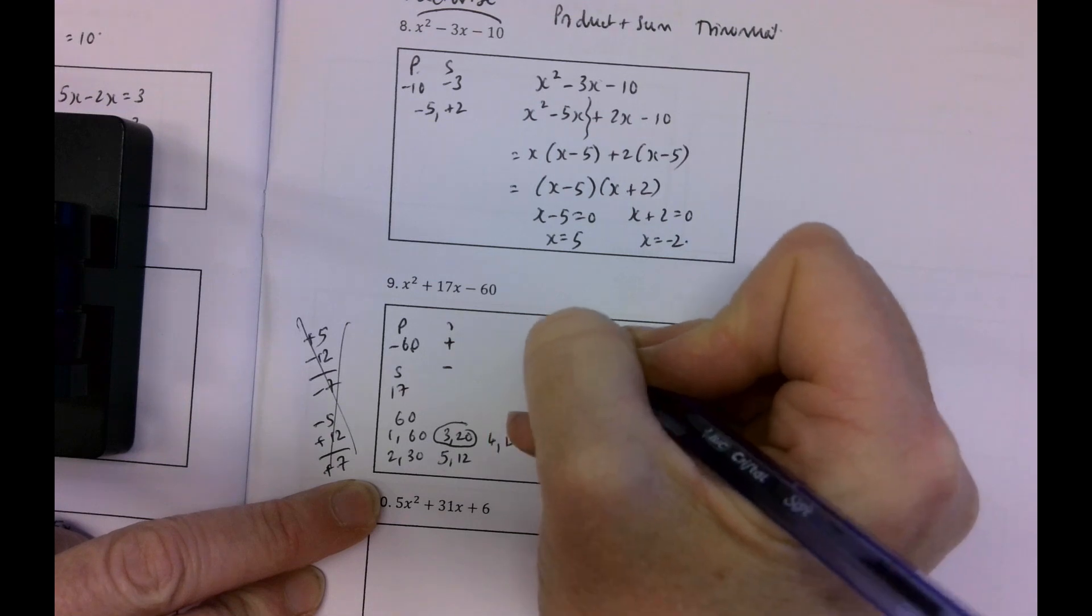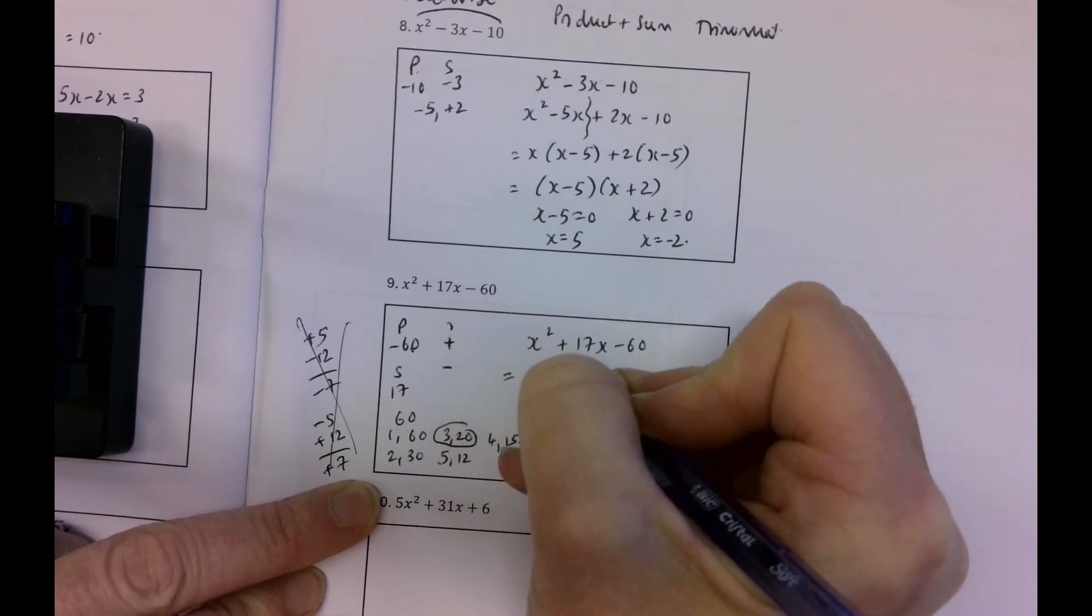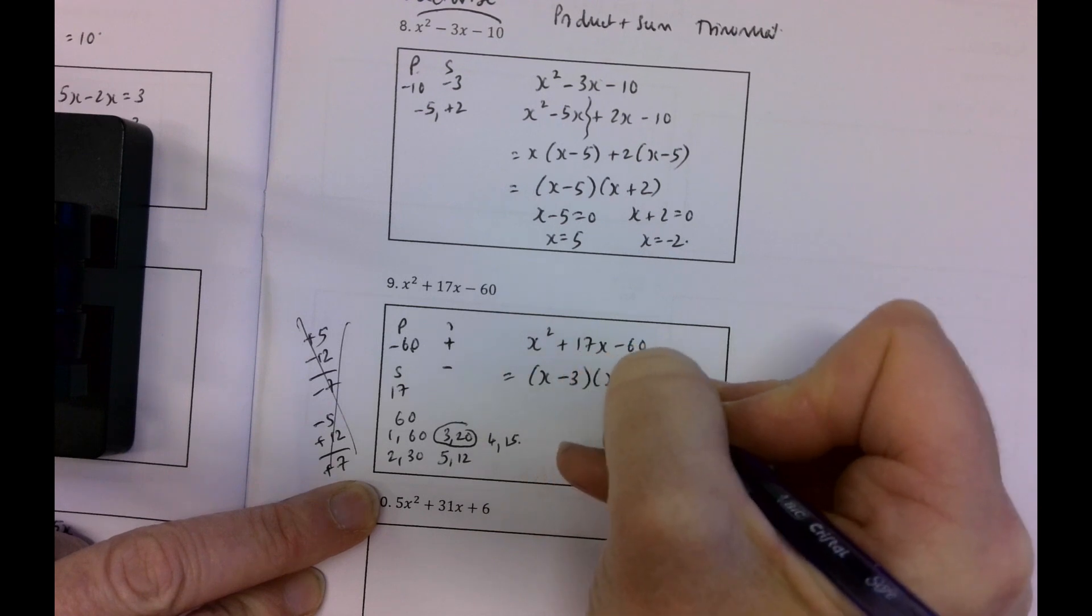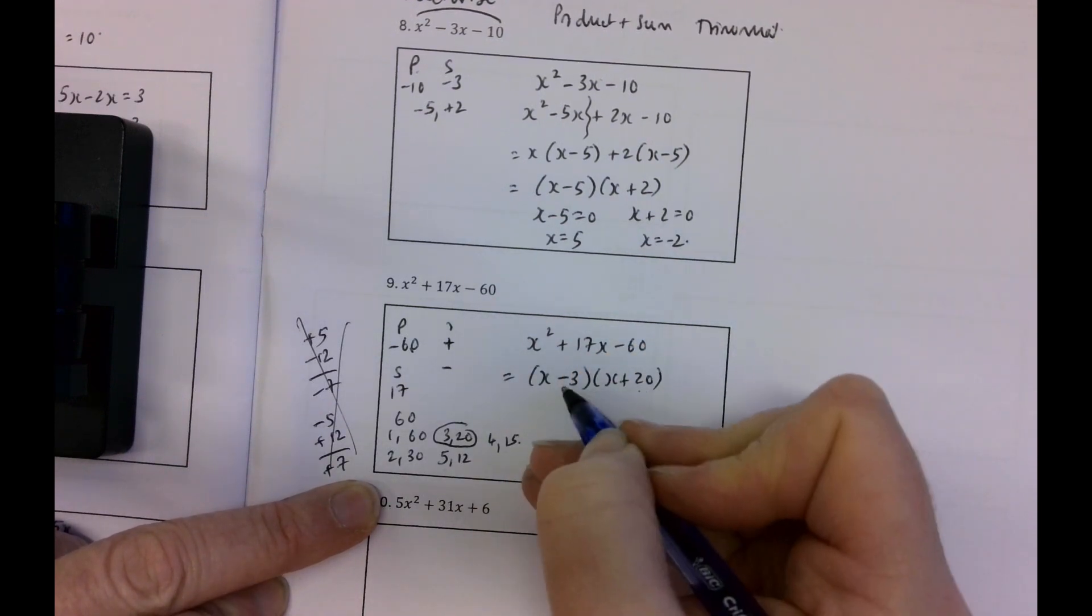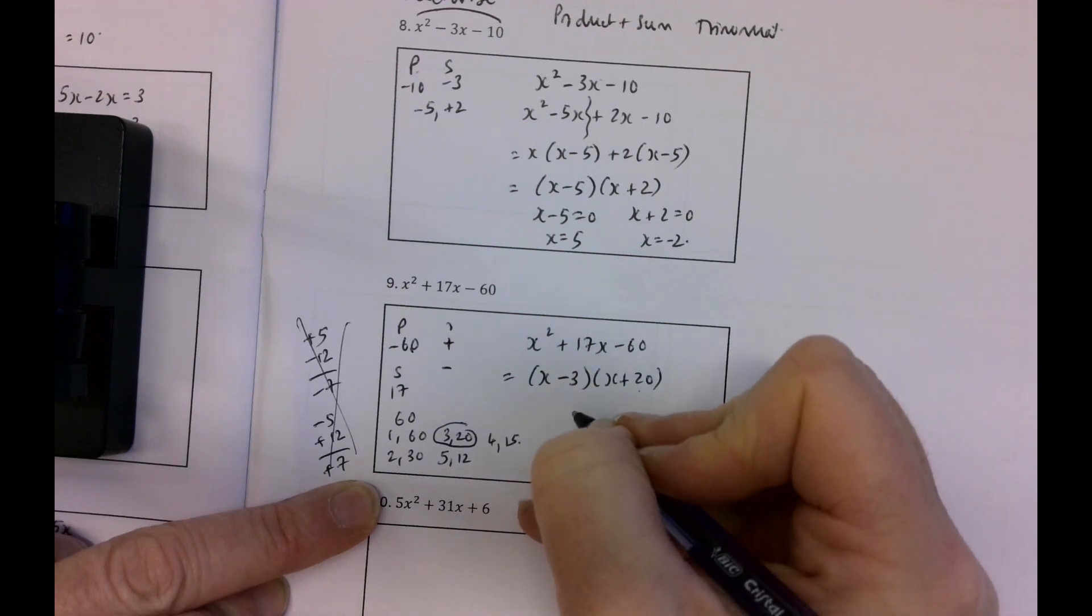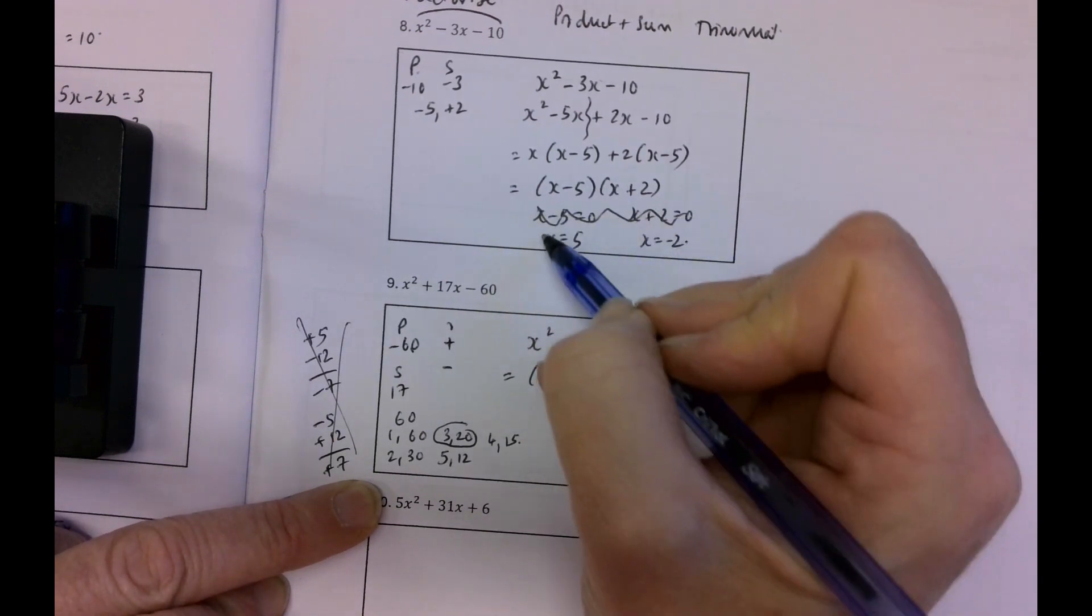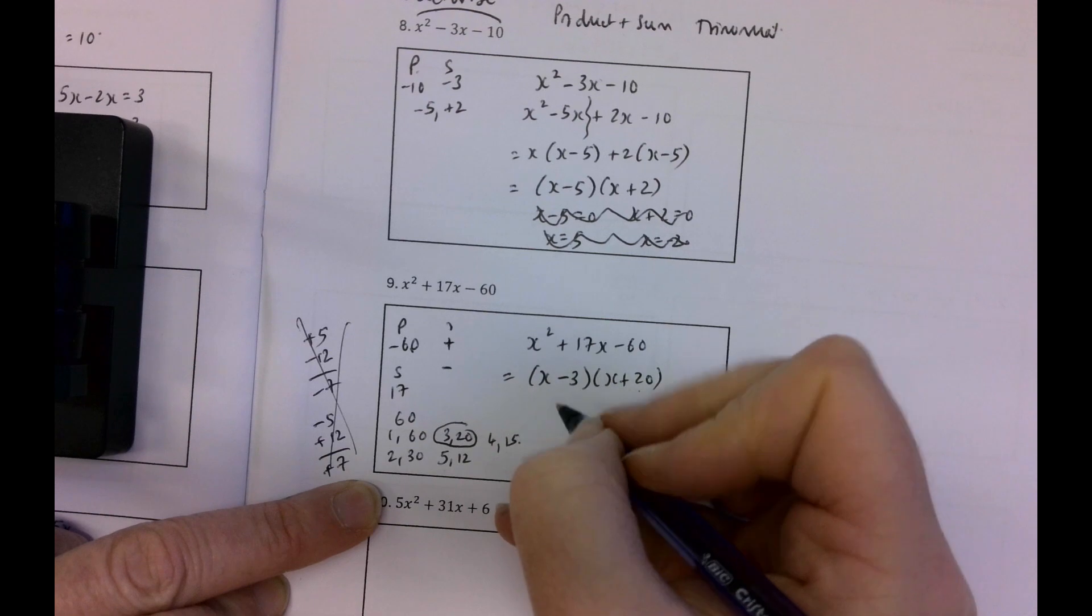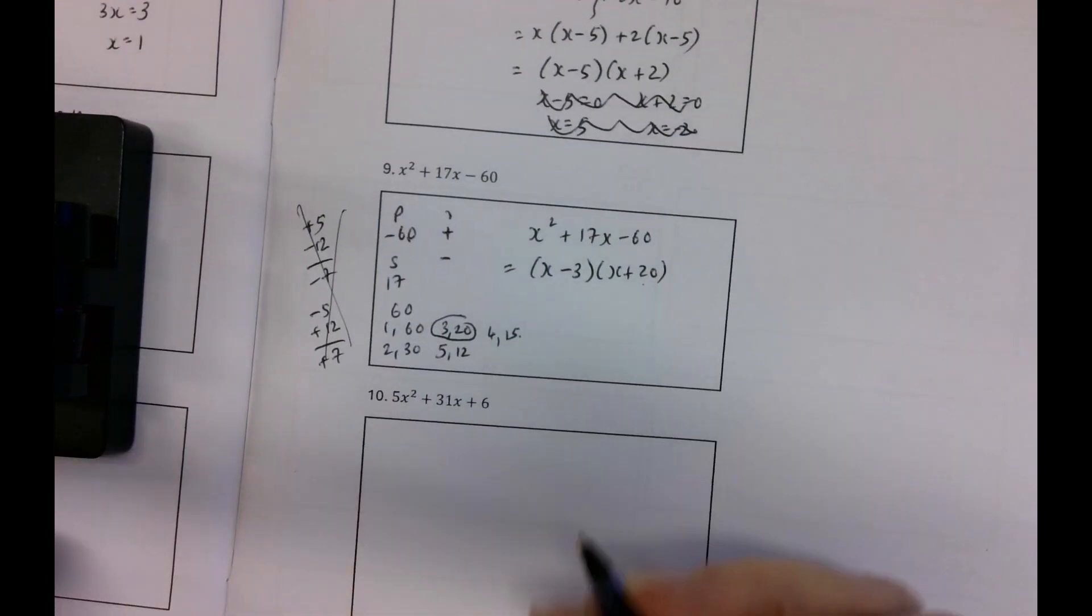So x squared plus 17x minus 60 is equal to x minus 3 by x plus 20 because minus 3 by 20 is minus 60 and 20x minus 3x is 17x. So that's actually I was just factorizing up here. Sorry I shouldn't even have done that. Shouldn't have solved. Okay so the factors of this are x minus 3 and x plus 20.